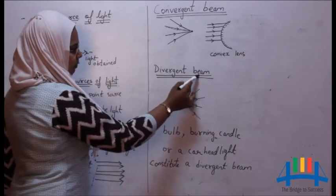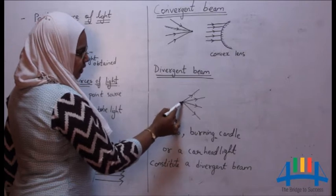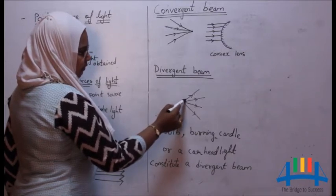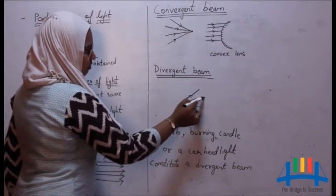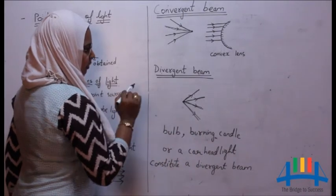Divergent beam: the rays of light originating from a point and traveling in different directions is called divergent beam of light.